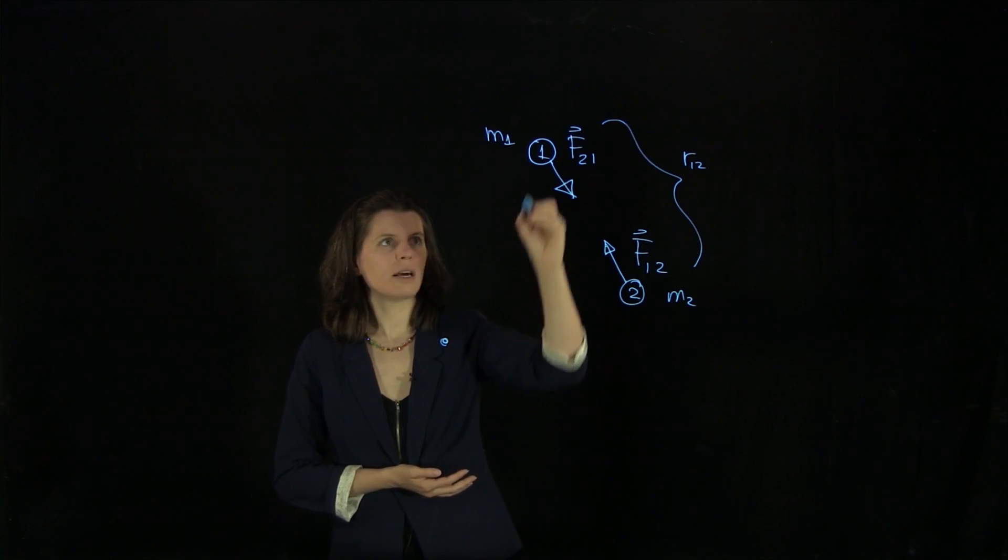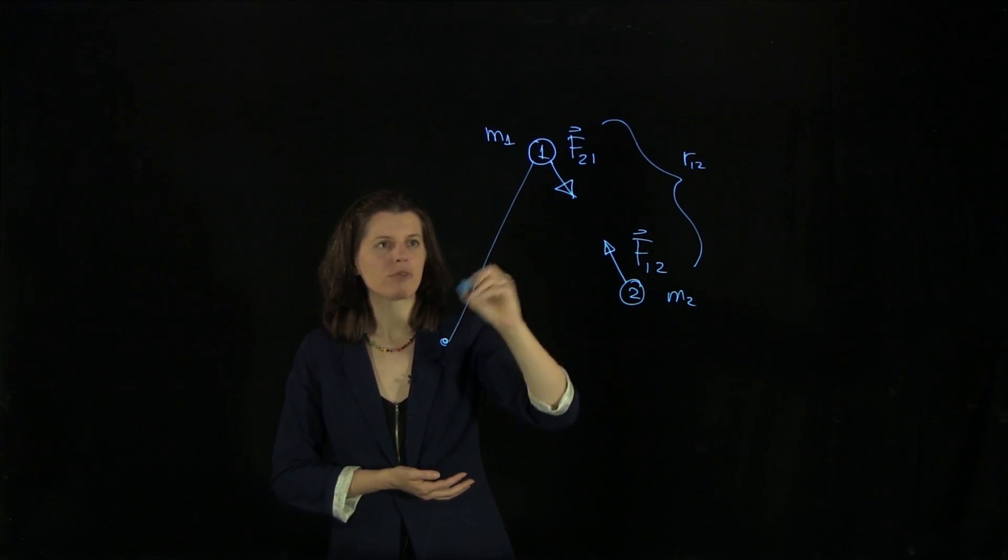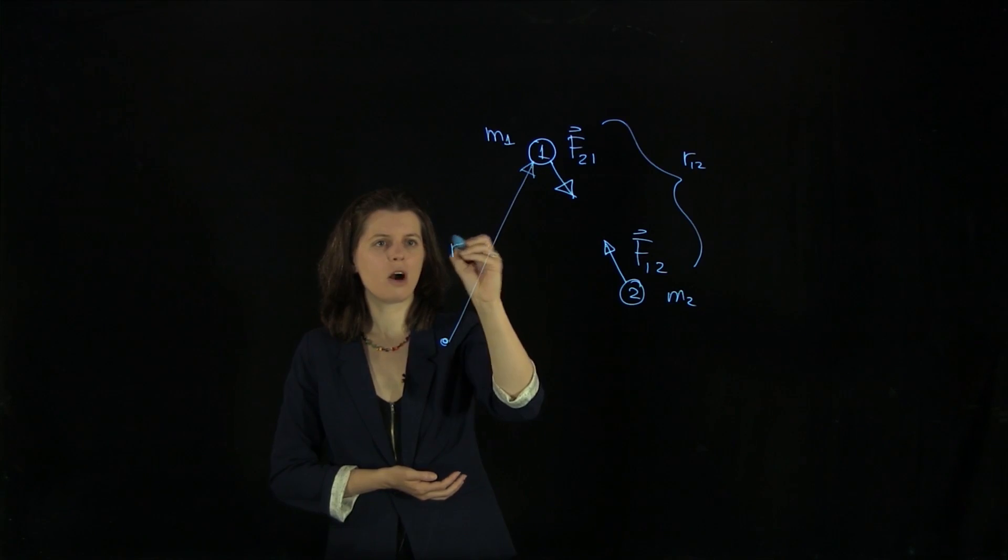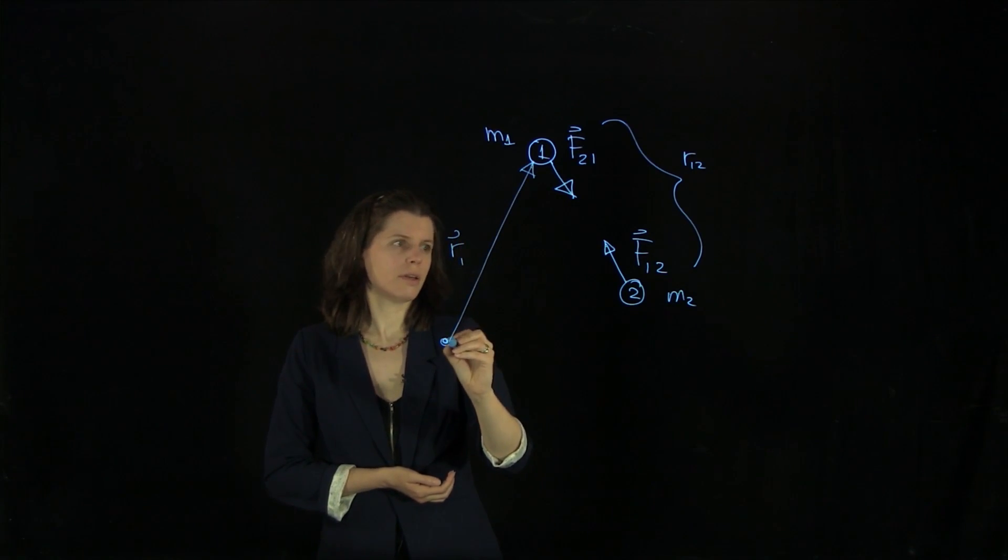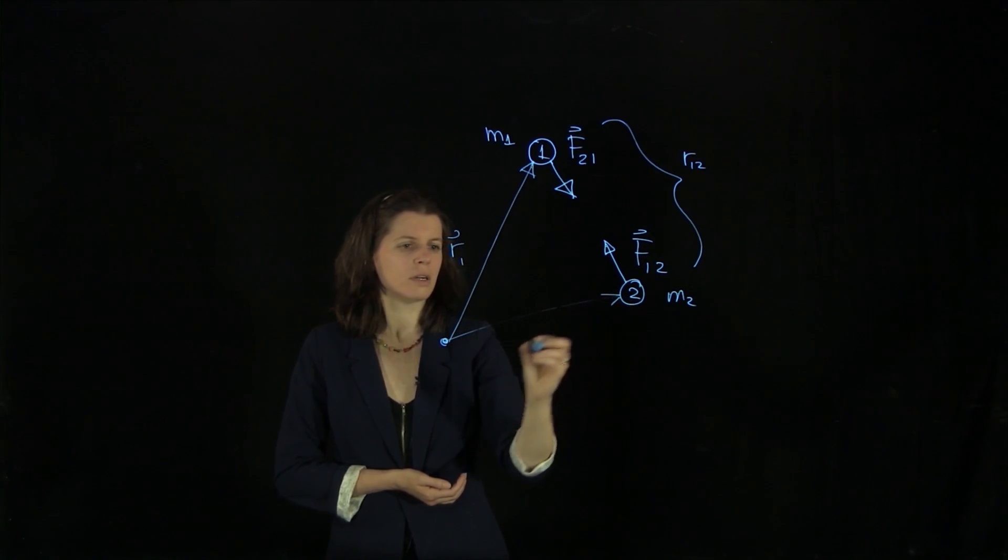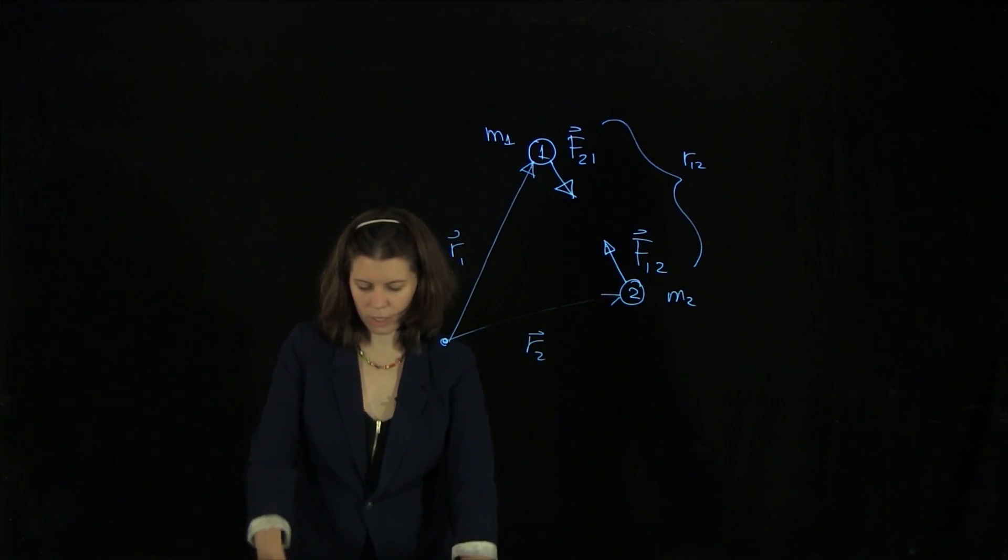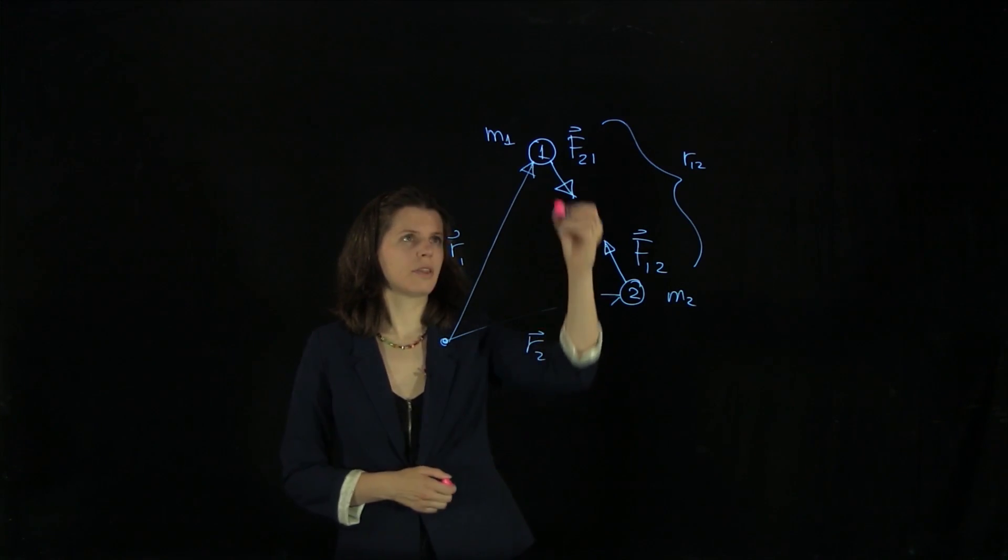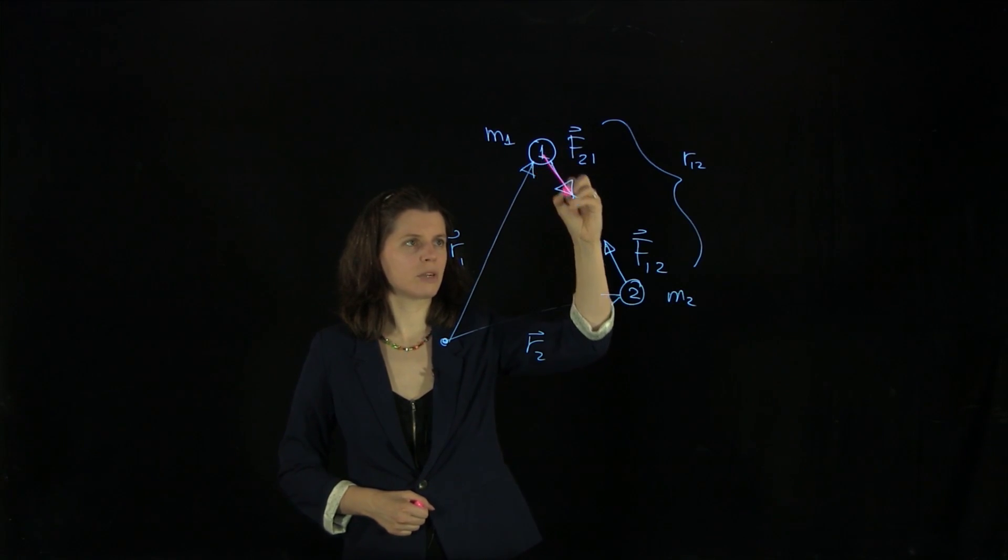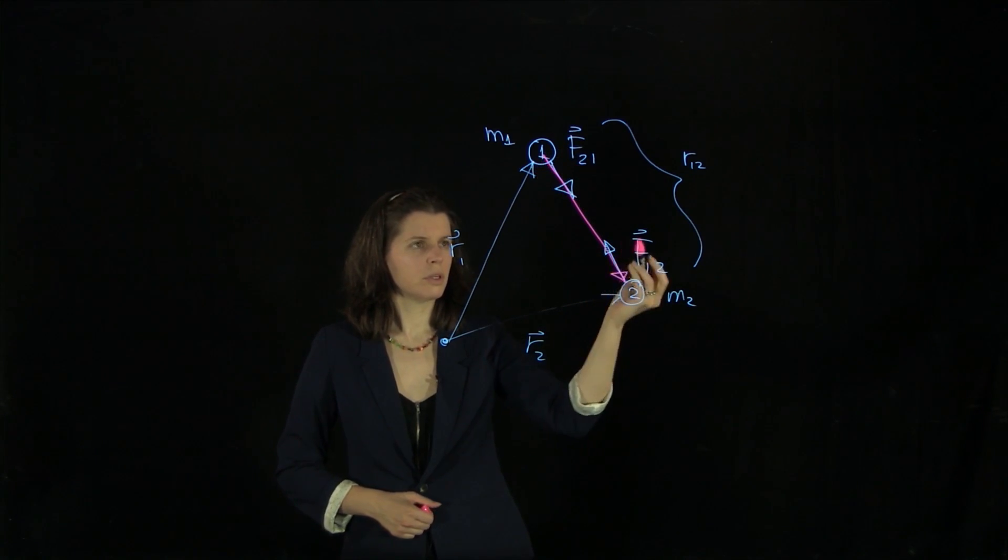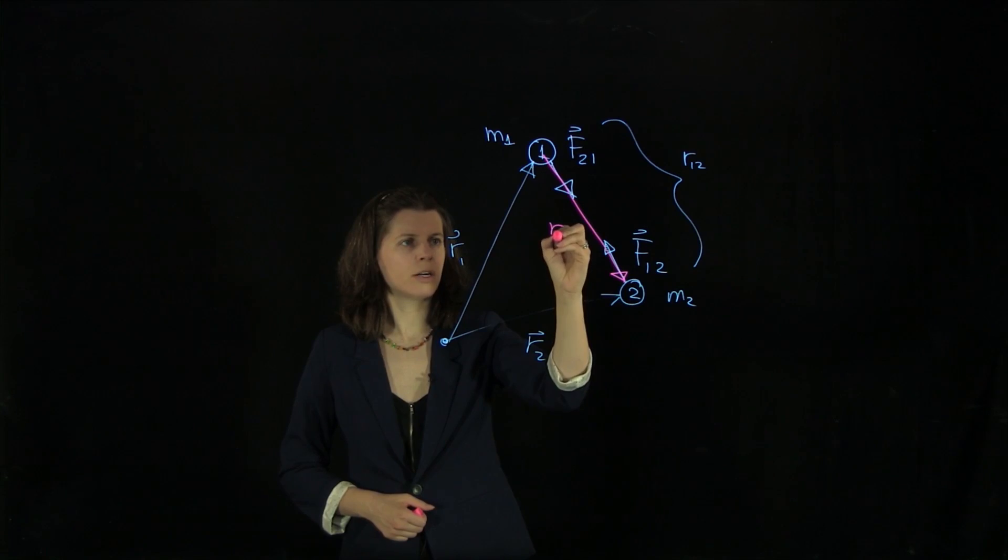And this object here goes from the origin to there, and we call this r1. And then we have here r2, which also means that the distance here between object one and two is r12.